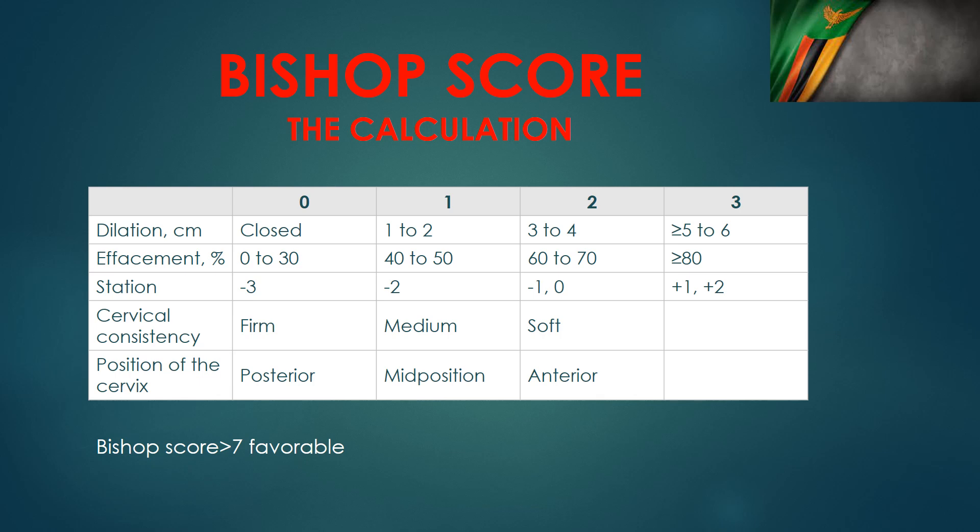So what are the parameters of the Bishop Score? We have dilatation, effacement, station, cervical consistency, and position of the cervix, and scores run from 0 to 3. For dilatation: closed is 0, 1–2 cm is 1, 3–4 cm is 2, and above 4 cm is 3. Effacement is a bit tricky: 0–30% is 0, 30–40% is 1, 60–70% is 2, and above 80% is 3. For station: minus 3 is 0, minus 2 is 1, minus 1 is 2, and plus 1 or above is 3.